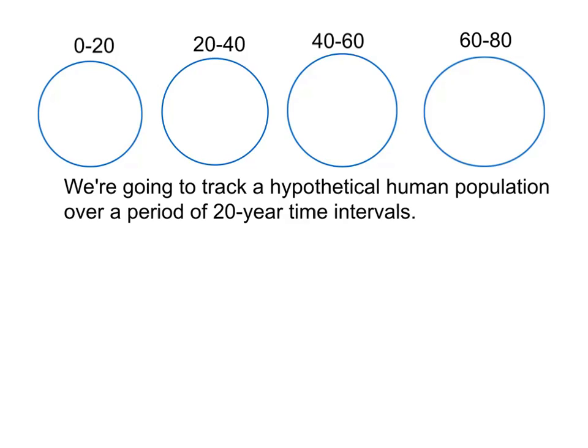Let's think about a hypothetical human population where we're going to track the population over a series of 20-year time intervals. There will be a group of people between 0 and 20 years old, a group from 20 to 40, a group from 40 to 60, and a group from 60 to 80. While there will certainly be people older than 80, we're not going to track people once they get past 80 years old.